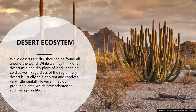When we try to understand the desert ecosystem, the very first thing that strikes our mind is the dry nature of the deserts. While deserts are dry, they can be found all around the world. The largest desert is the Sahara. While we may think of a desert as a hot dry piece of land, it can be cold as well. Deserts have the hottest temperatures in the daytime but cool down very fast at night, giving them an extreme range of temperature within a single day. This extreme temperature range is the main cause of formation of deserts.